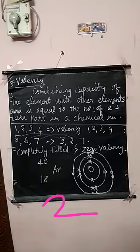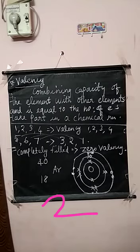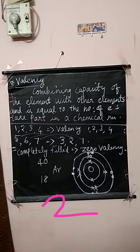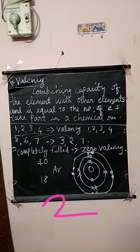If the element has valence electrons 1, 2, 3, or 4, the valency is 1, 2, 3, or 4. If valence electrons are 5, 6 — meaning 5 electrons are present in the outermost shell — because the maximum number of electrons in a shell is 8, if only 5 are filled, the valency is 3. That is, 8 minus 5 equals 3. So if valence electrons is 5, the valency is 3.